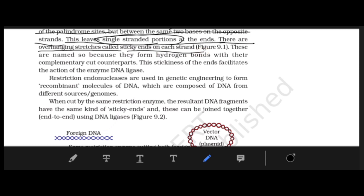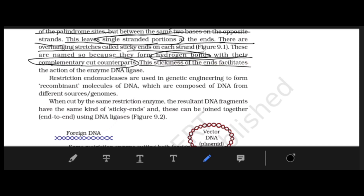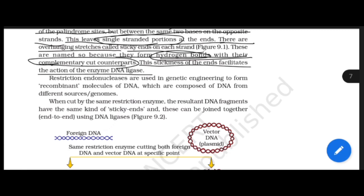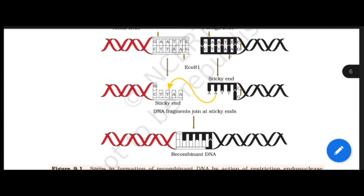The overhanging single-stranded portion — sticky ends — can form hydrogen bonds with their complementary counterparts. This stickiness of the ends allows DNA ligase to join them. The sticky end from the foreign DNA joins with its corresponding complementary counterpart, and then they are ligated together to form the recombinant.